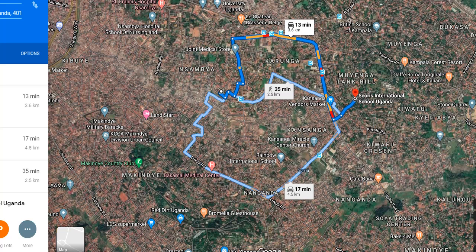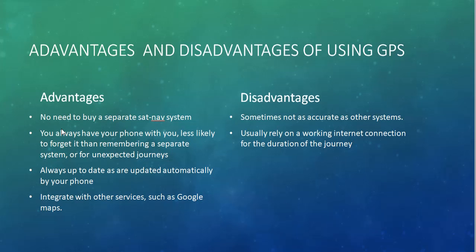Some advantages of GPS on smartphones: you don't need to buy a separate navigation system since you always have your phone with you. Disadvantages include that it is sometimes not as accurate as dedicated navigation systems — for example, Google Maps may direct you to a blocked or impassable route — and it usually relies on a working internet connection for the duration of the journey, so without internet you cannot access GPS connectivity.